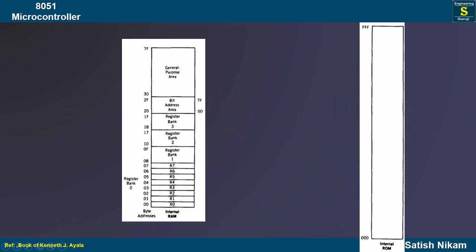As there are two memories, ROM and RAM — ROM is used to store the program written for the system operation. This program is in the form of code, so we also call the ROM memory or program memory as code memory.